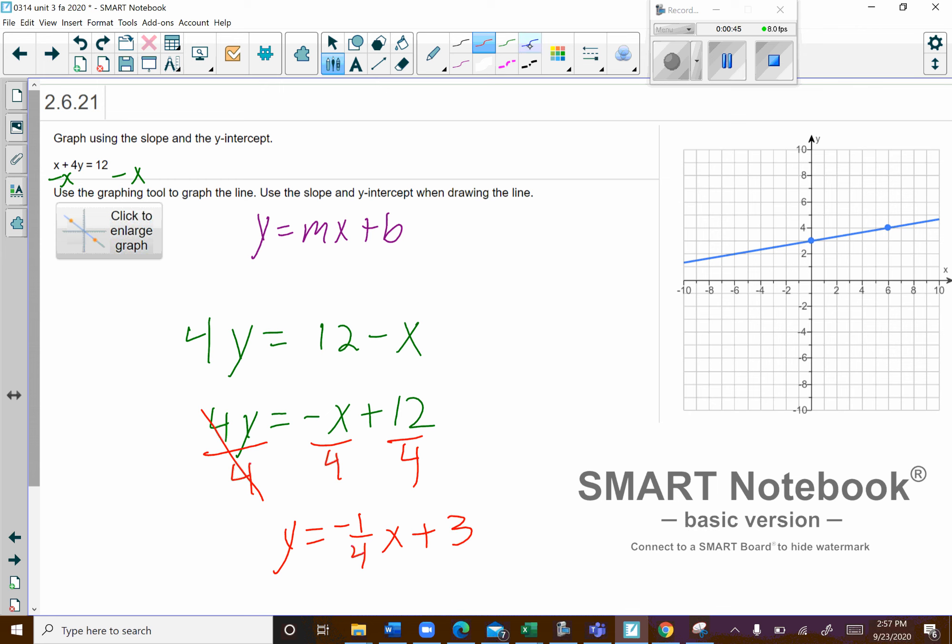Now that I have it in slope-intercept form, my slope is the m value. So my slope is negative 1 4th, and then my y-intercept, so by definition you let x equal 0. If I let x equal 0, y is going to equal the 3 right there. So that's my y-intercept.